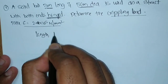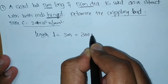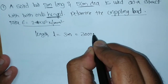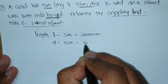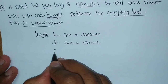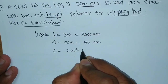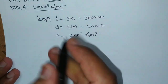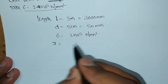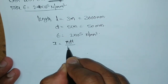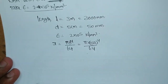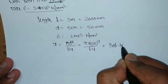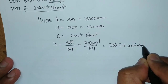Given: length L is 3 meters, which in mm is 3000 mm. Similarly, the diameter D is given as 5 centimeters, that is equal to 50 mm. The value of E is given as 2 into 10 to the power of 5 Newton per mm squared. Now, the value of I - for the circular section the formula is Pi D to the power 4 by 64. Here D is 50 mm, so 50 to the power 4 by 64. Calculating this value we get 306.79 into 10 to the power of 3 mm to the power 4.